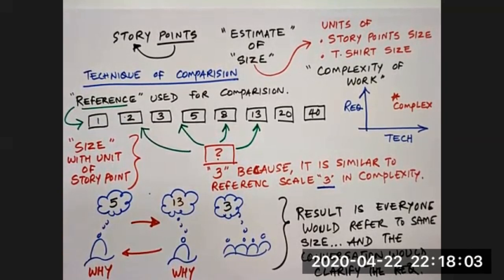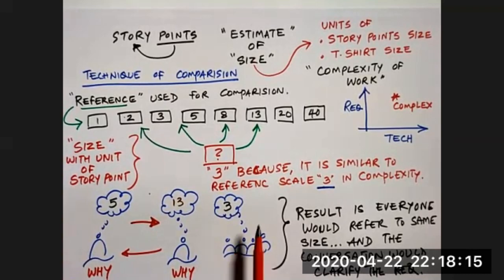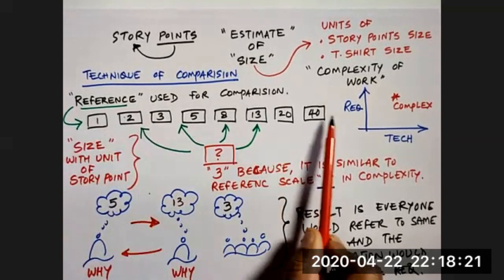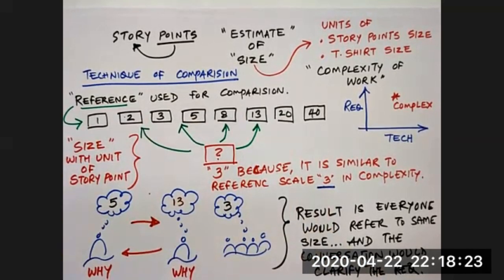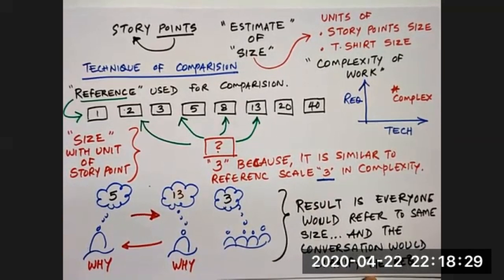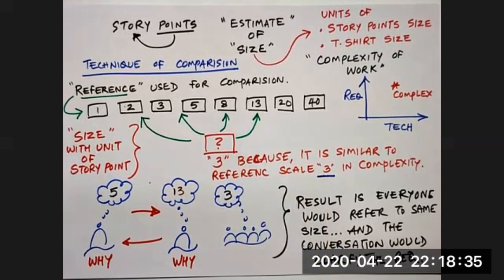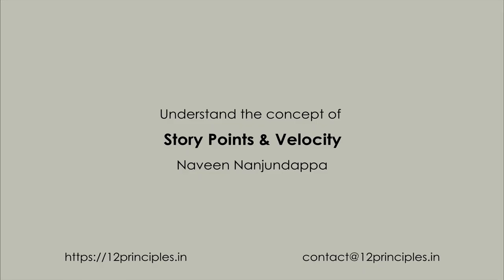If you look at the whole ecosystem, story point is nothing but a relative size estimation technique for the whole team. So if you change the team, the team members are going to have a different number. The story point is specific to the team and specific to the reference points. I hope this gives an indication of what a story point is.